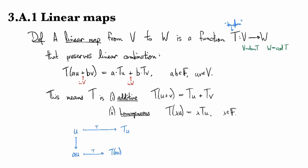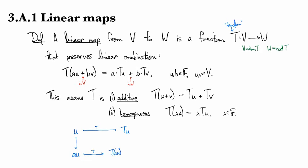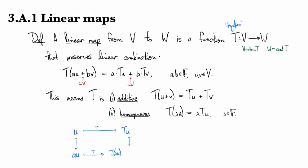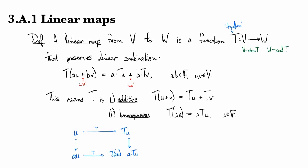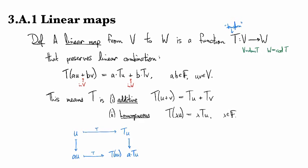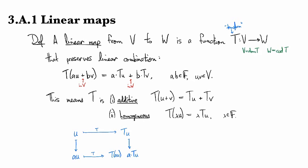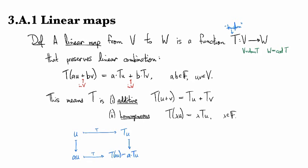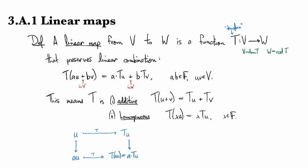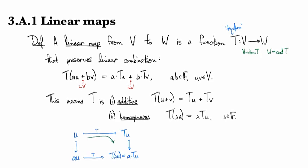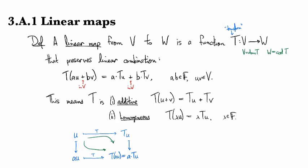I can also take AU and apply T to it and that would give me T of AU. I can also scale TU and that would give me A times TU. The question is going around both ways, did I get the same thing? For things to work out, yes, we want these to be the same. So it's saying that if I go around the square this way or if I go around this way, I get to the same place.